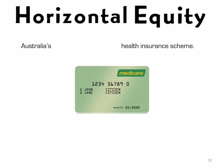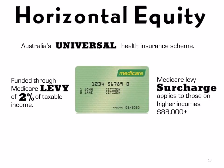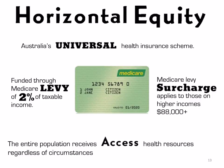Horizontal equity is about spreading resources across the entire population so that everybody has access. A great example is Medicare, Australia's universal health insurance scheme, funded through the Medicare levy — a 2% levy placed on the taxable income of all working Australians. The Medicare levy surcharge applies when a person earns more than $88,000. The whole population contributes, and this allows for access to health resources regardless of someone's circumstances — that is horizontal equity.